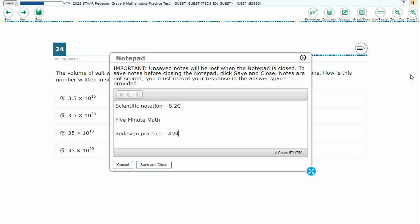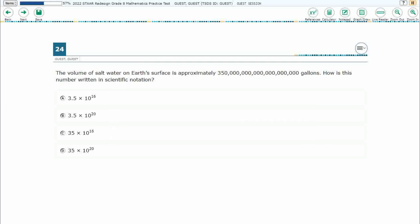Hello, and welcome to 5-Minute Math. Today we are looking at the 8th grade concept of scientific notation. This is standard 8.2c in the great state of Texas, and we are using item number 24 of the Redesign Practice Online Star Test. If you haven't done so already, please go ahead and take a moment to pause the video, work this problem out on your own, unpause it, and we will look at our answers together.